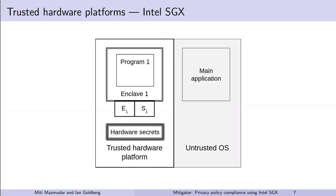Trusted hardware containers are known as enclaves within this platform. Applications are to be split by developers into an untrusted main part and a trusted enclave part. The untrusted main part consists of system calls and calls into the enclave code, whereas the trusted part consists of code whose confidentiality or integrity needs to be preserved. The enclaves are signed by the enclave developers. The enclave measurement E1 is a hash of the enclave binary, and the signer measurement S1 is a hash of the verification key corresponding to the enclave signing key.